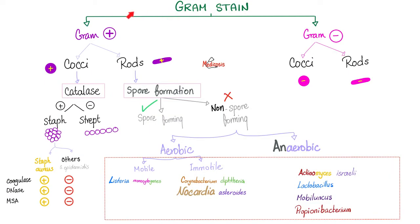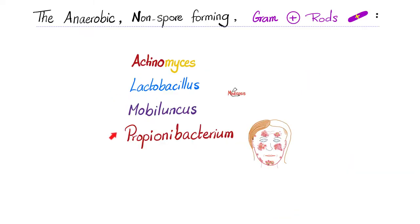Gram-positive rods, especially the non-spore forming, can be divided into aerobic and anaerobic. The aerobes include the motile Listeria and the immotile Corynebacteria and Nocardia. The anaerobic non-spore forming gram-positive rods include four famous ones: Actinomyces israelii, Lactobacilli, Mobiluncus, and Propionibacterium, which causes acne.